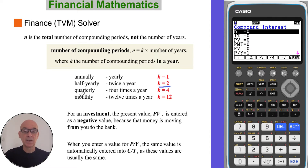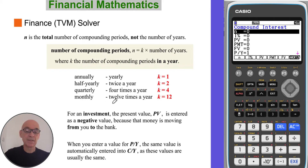If the interest is compounded quarterly — four times a year — then K equals four. And if the interest is compounded monthly — 12 times a year — then K equals 12.